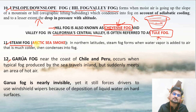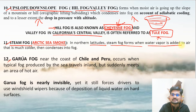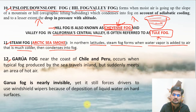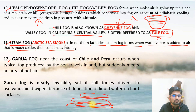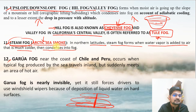Steam fog is also called arctic sea smoke. In ocean or arctic areas in northern latitudes, steam fog forms when water vapor is added to much colder air and condensation happens into fog. The land and near-surface area is much cooler, while upper air is a little warmer, creating a temperature difference. In arctic areas in extreme winter, this is called steam fog or arctic sea smoke. For exam purposes, remember these names: Cheyenne fog, Tule fog, and arctic sea smoke.